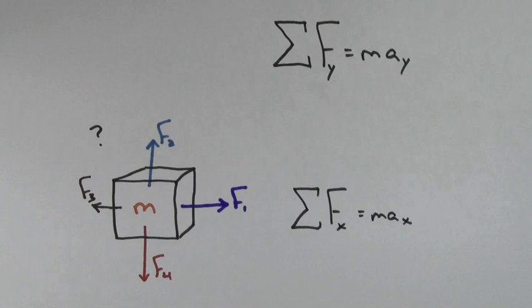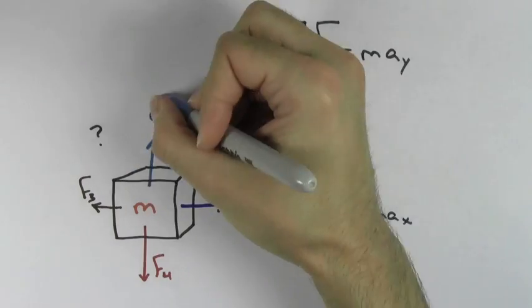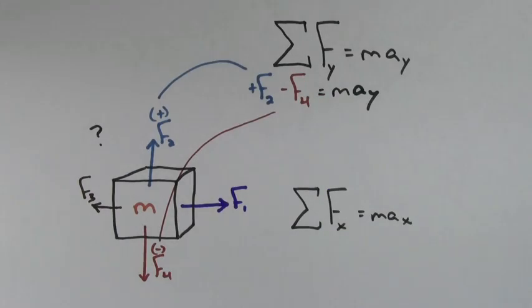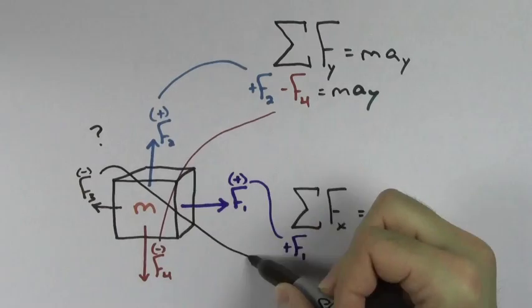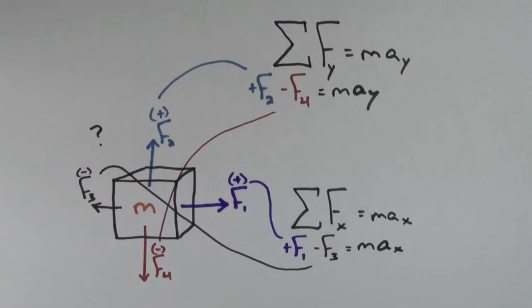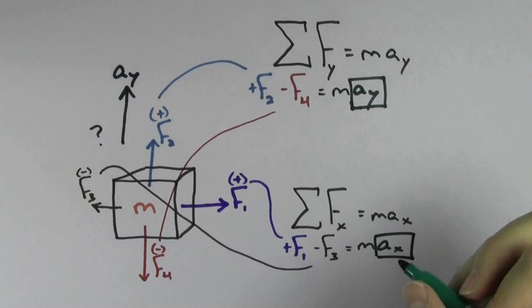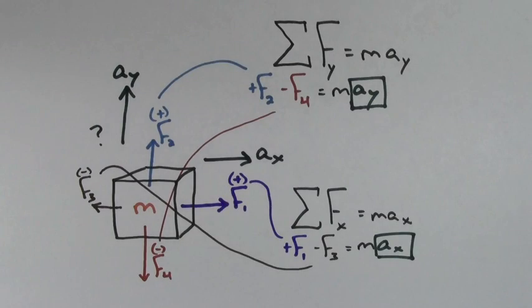Be careful to include only vertical forces into the vertical equation. If the forces point up, they're positive, and if the forces point down, they're negative. Similarly, make sure you only include horizontal forces into the horizontal forces equation. Forces to the right are positive, and forces to the left are negative. Keep in mind that the vertical forces equation is telling you about the acceleration in the vertical direction, and the horizontal forces equation is telling you about the acceleration in the horizontal direction.